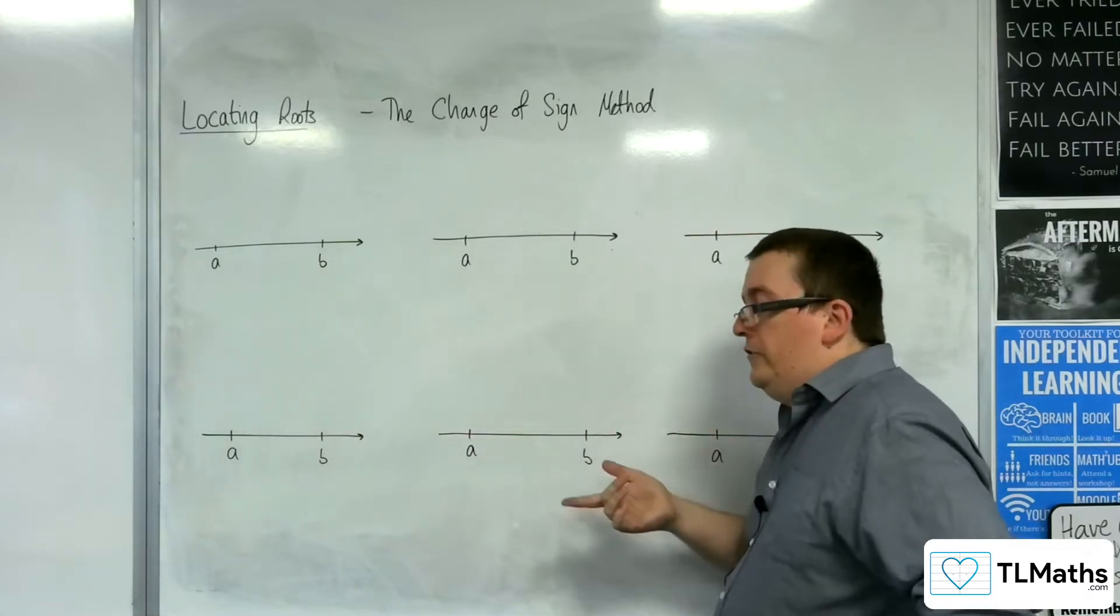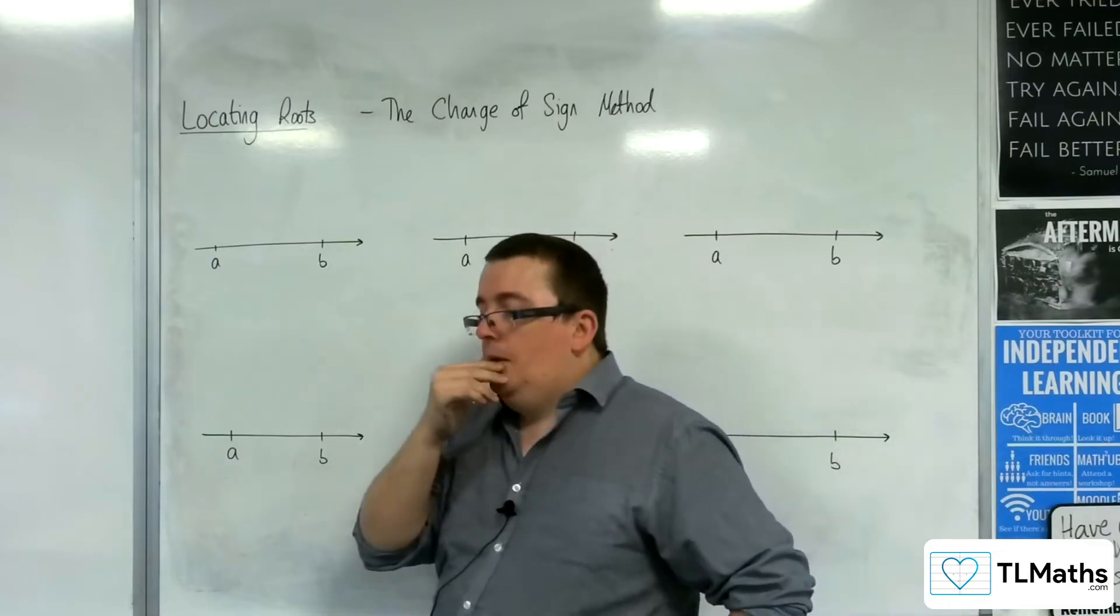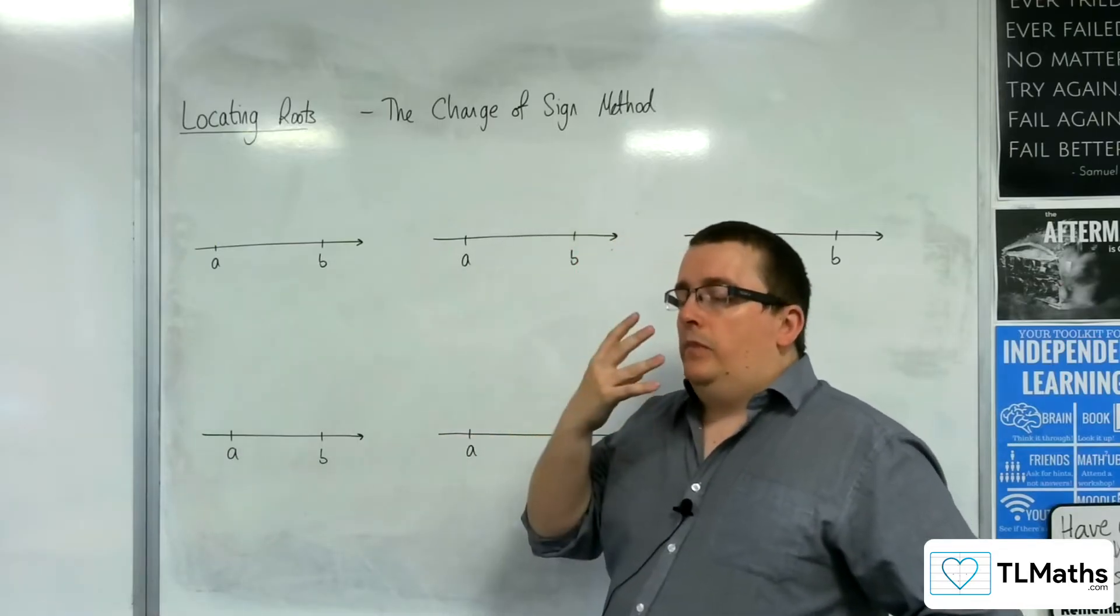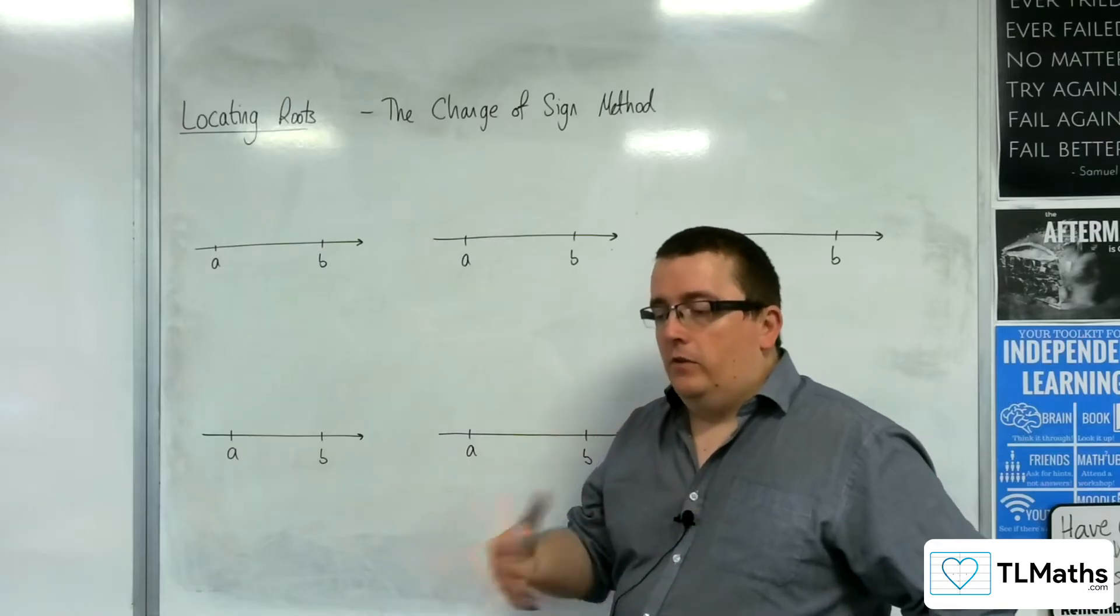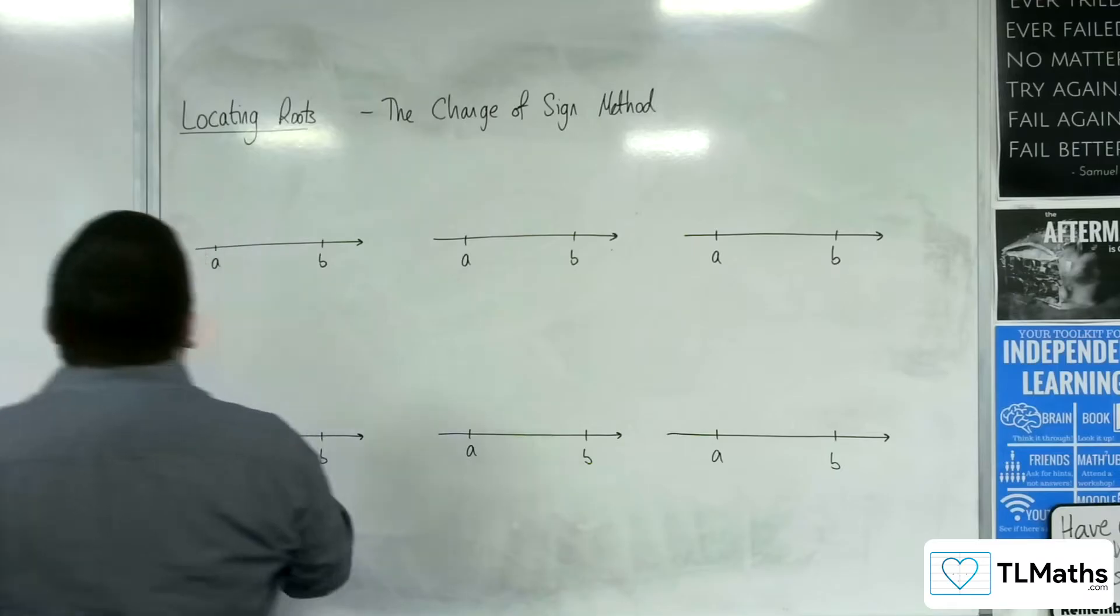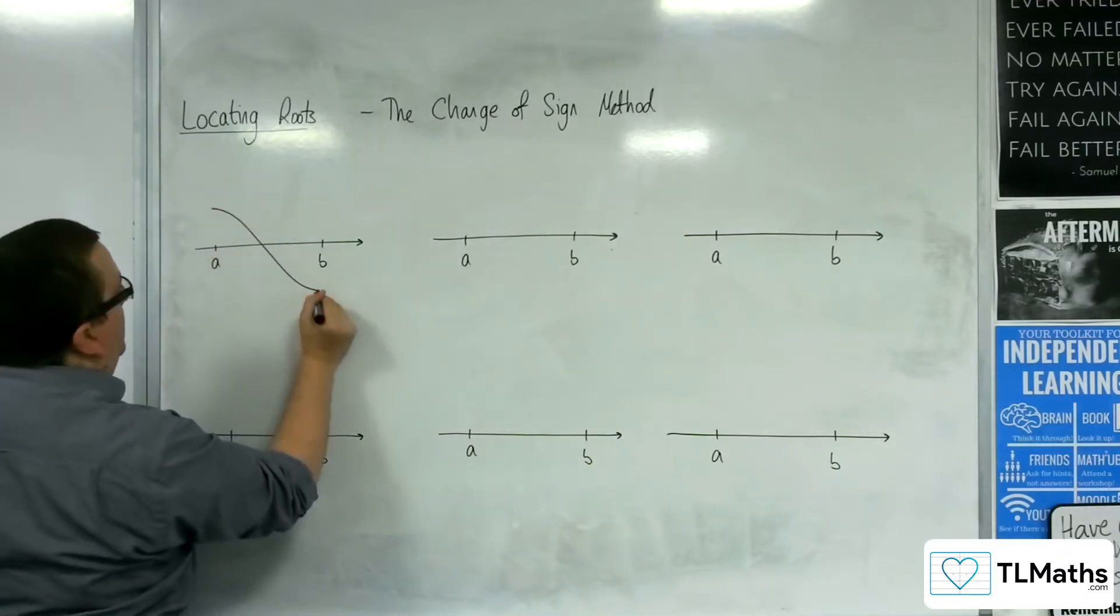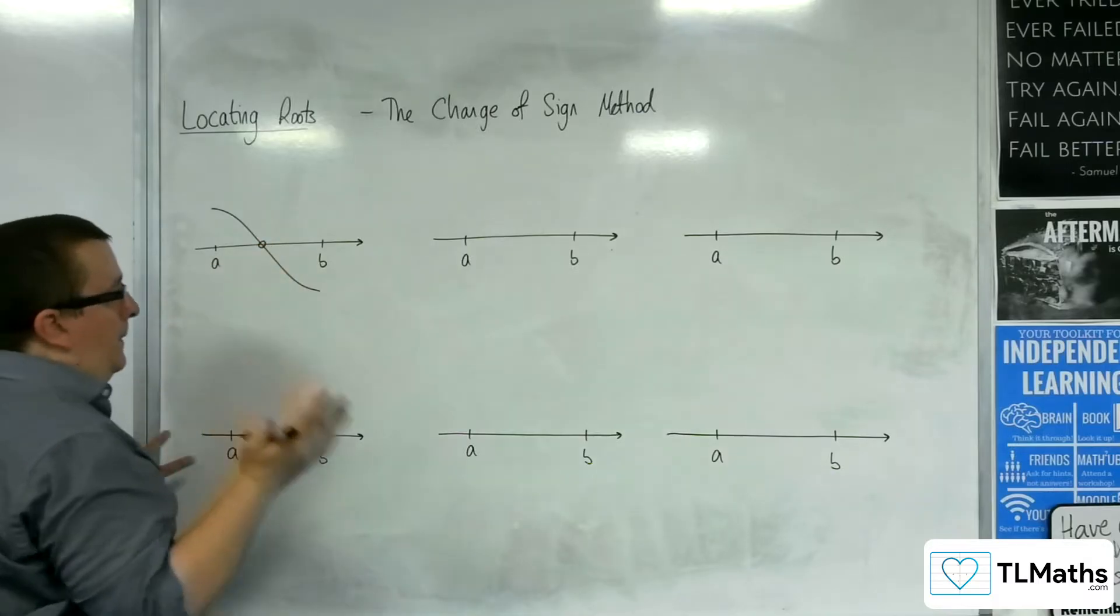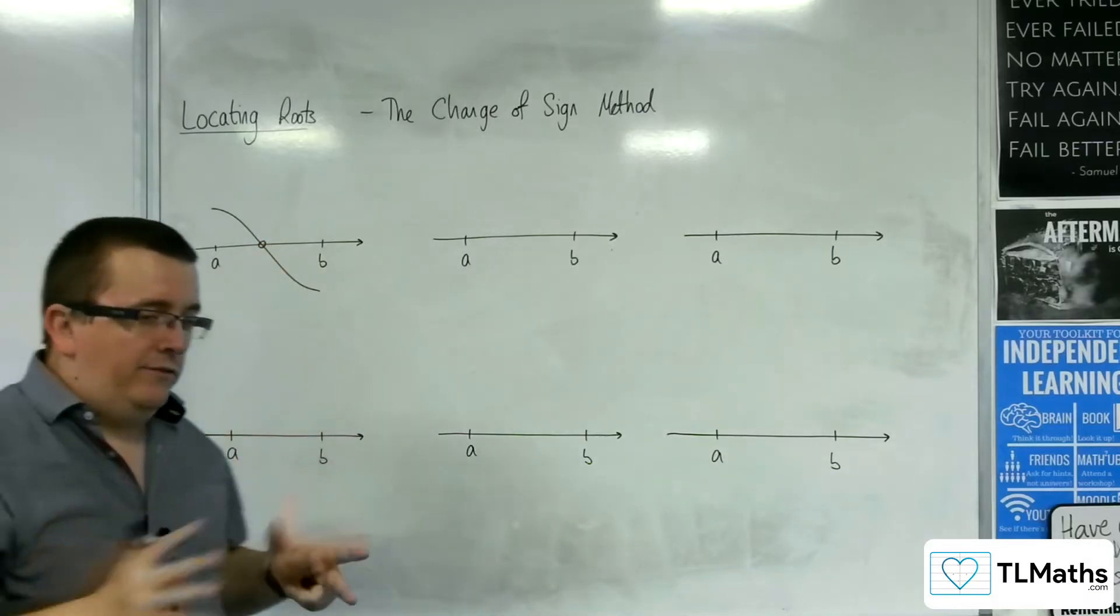So let's first of all think about that initial diagram that I had. You can have a change of sign and it's continuous and you can have one root. So we have this situation where we could have the curve looking like this. And so there is this one root in between. One positive, one negative. Fine.